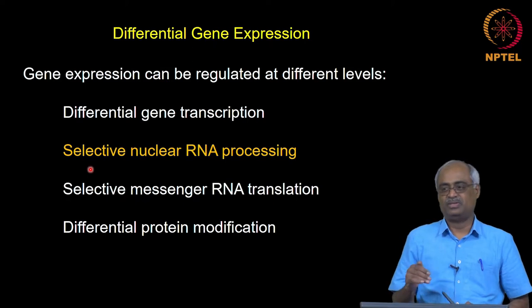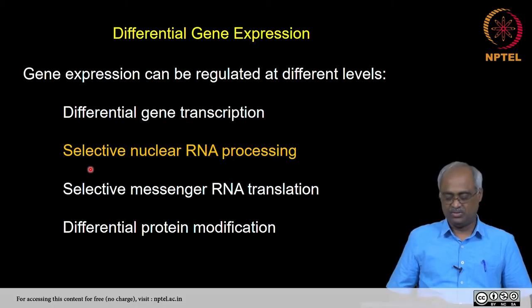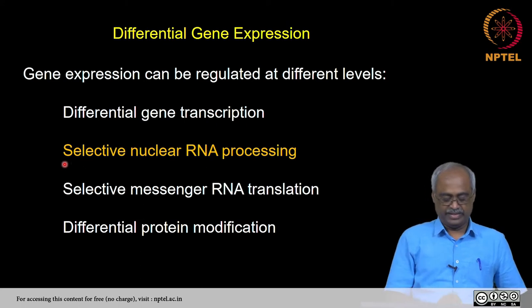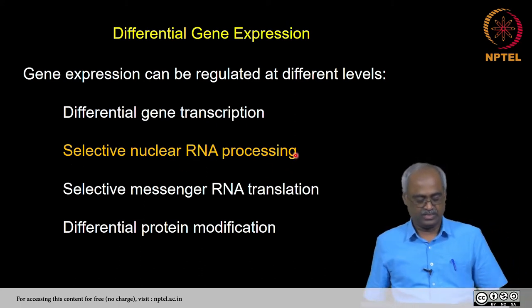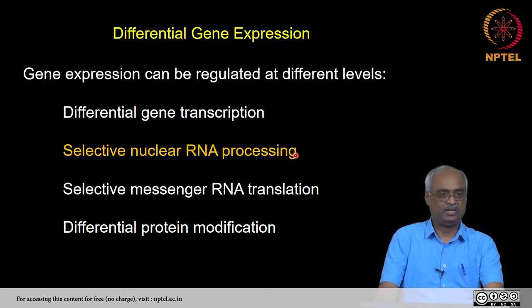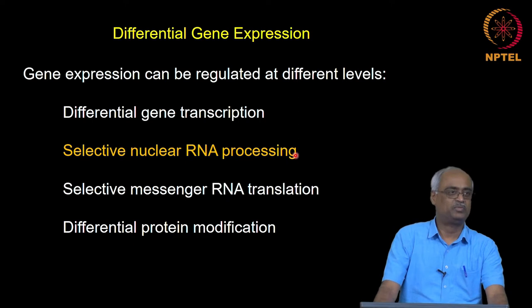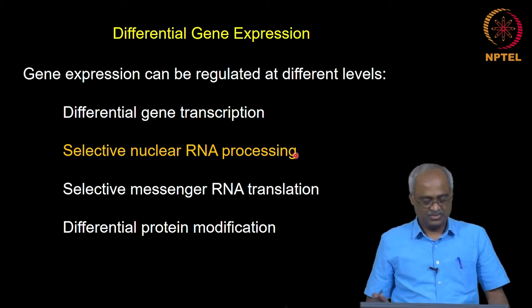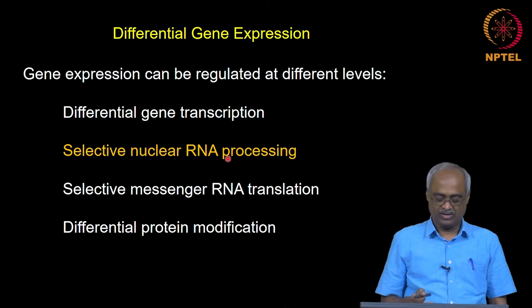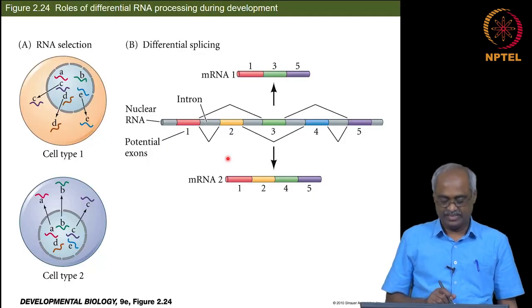Today we are moving forward from the chromatin to the next stage in gene expression regulation. The next step in gene expression is nuclear RNA processing, which is obviously eukaryote-specific. We are in a developmental biology class, so we are constantly talking about a multicellular environment. Therefore, splicing, nuclear RNA processing, and other processing all become important.